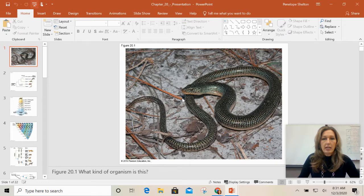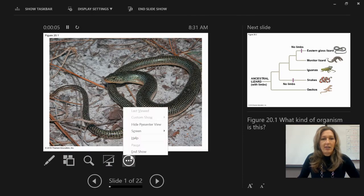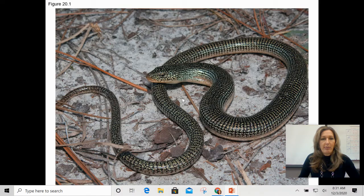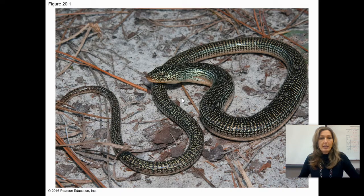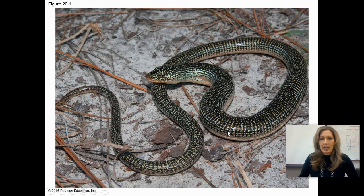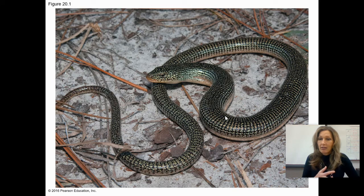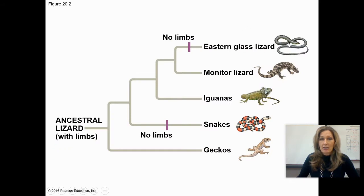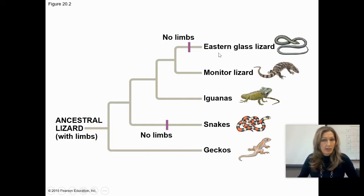Here's a picture that most people think is a snake, but it's not — this is a legless lizard. This is an example of how an analogous structure can lead us on the wrong path of evolutionary relationships. This legless lizard is related to a snake, but they don't share a recent common ancestor. Through systematics, looking at homologous structures, anatomical features, and molecular homologies — DNA and protein similarities — we find that this eastern glass lizard actually shared a more recent common ancestor with the monitor lizard. This phylogenetic tree is showing us the evolutionary relationships of these organisms.